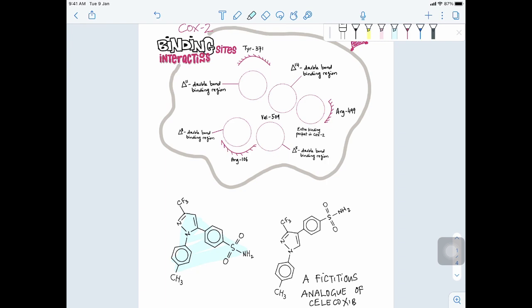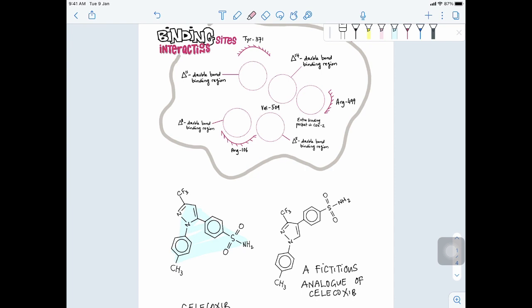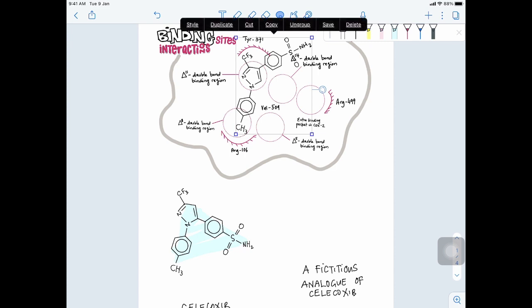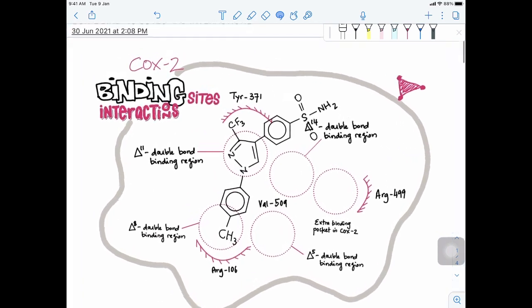On the contrary, the pattern here in the case of this fictitious analog of celecoxib, it has all the celecoxib functionality. But here you can see that it has a bigger triangle. This looks like a slanted triangle. So in terms of the shape this would be quite different. Let's just bring it over there and position the pyrazole ring over on the 11th position of the double bond binding region.